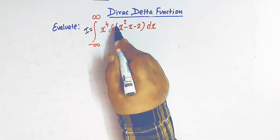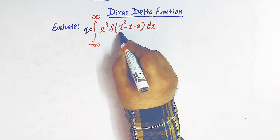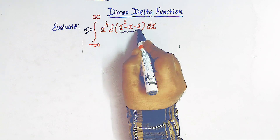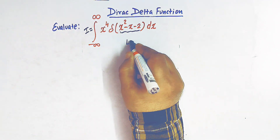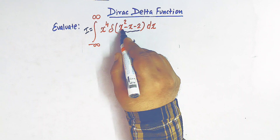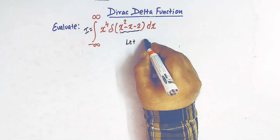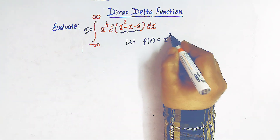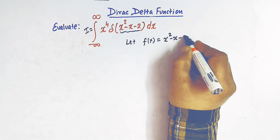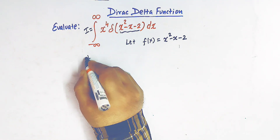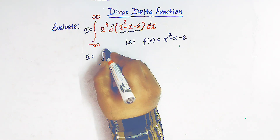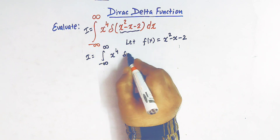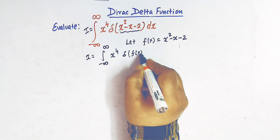Inside the Dirac delta function we have a quadratic expression, that is x squared minus x minus 2. Let us take this quadratic polynomial as f of x, so f(x) = x squared minus x minus 2, so that our integral reads as the integral from minus infinity to infinity of x raised to 4 times delta of f(x) dx.